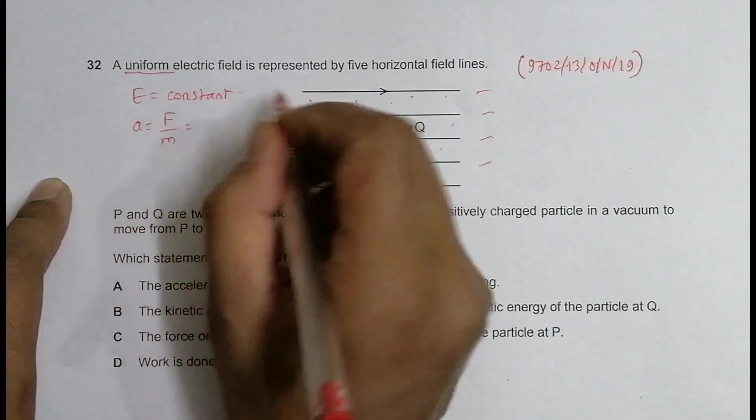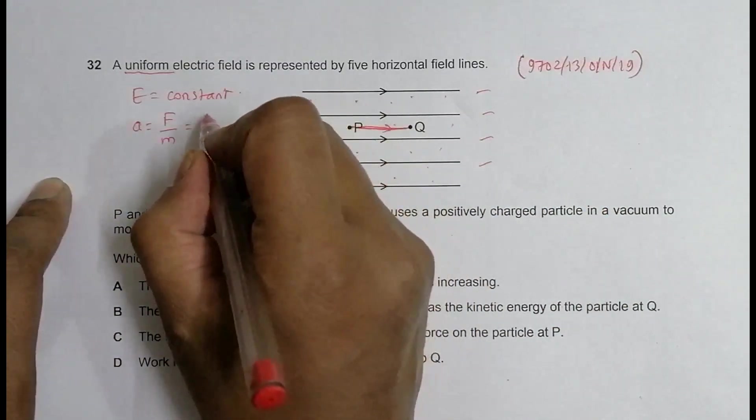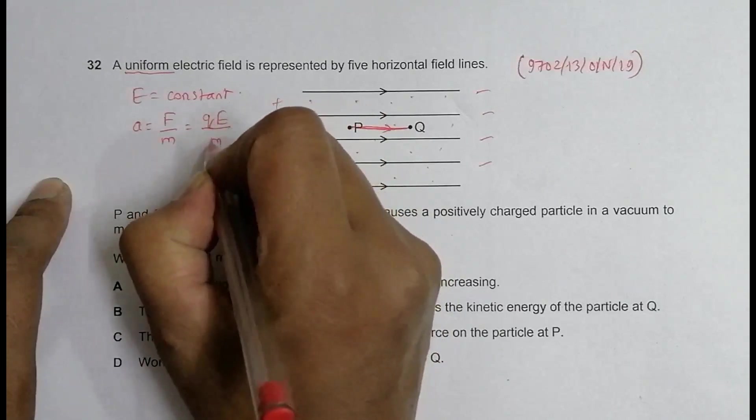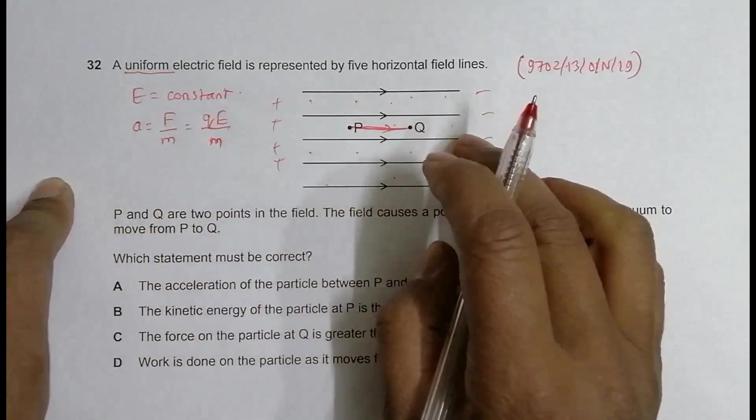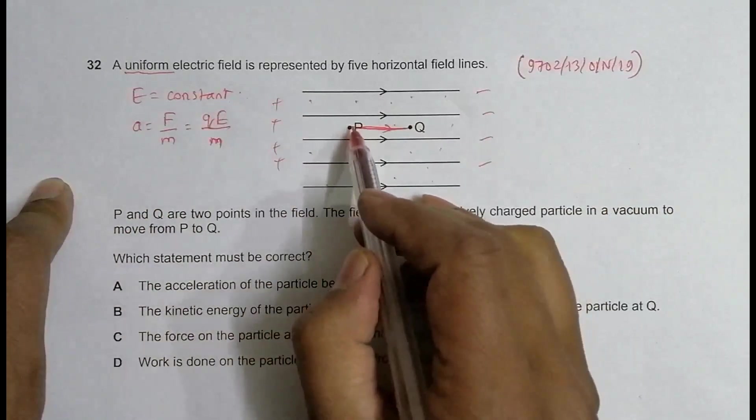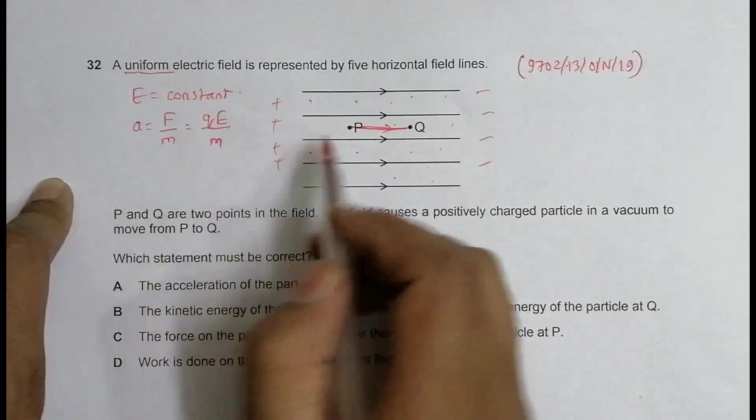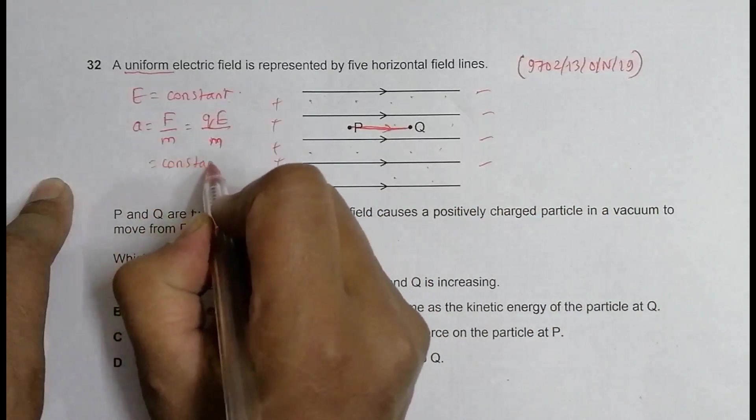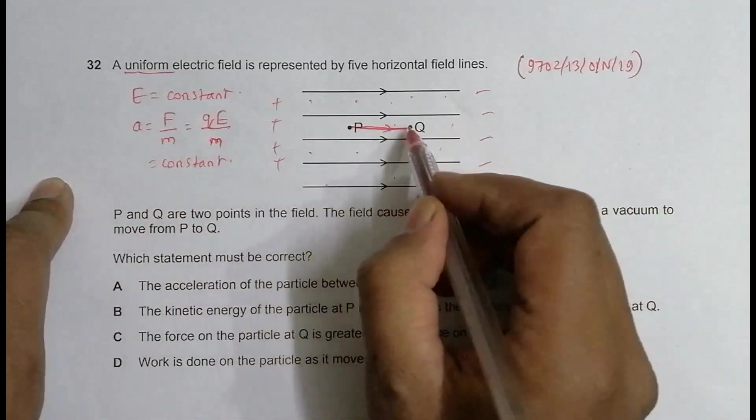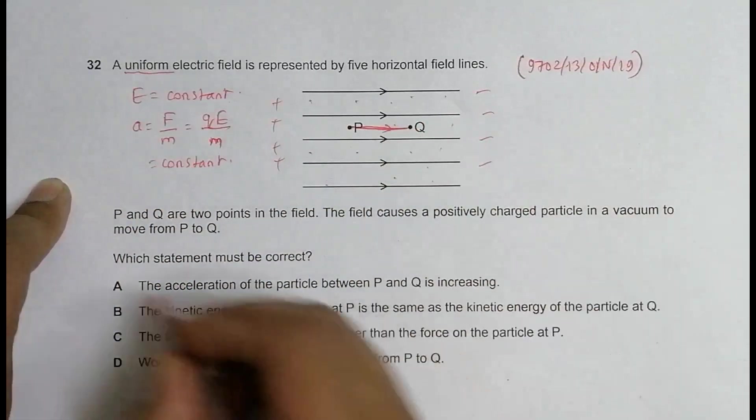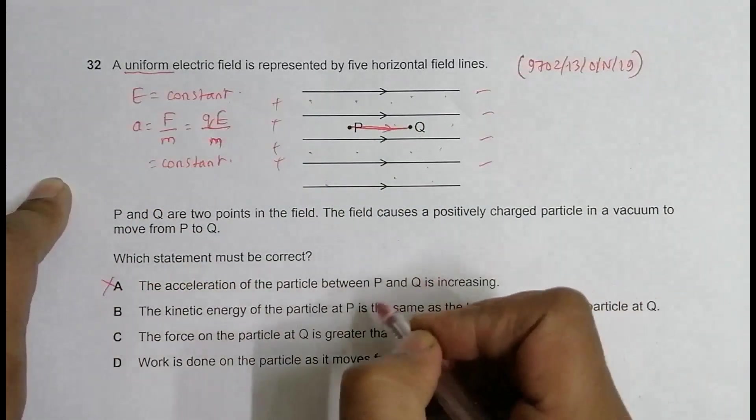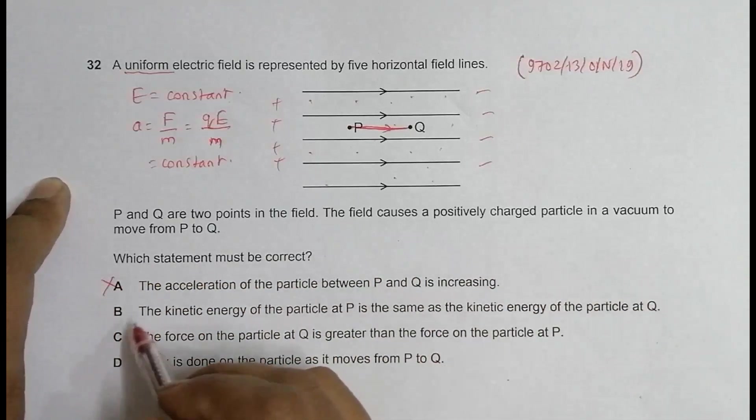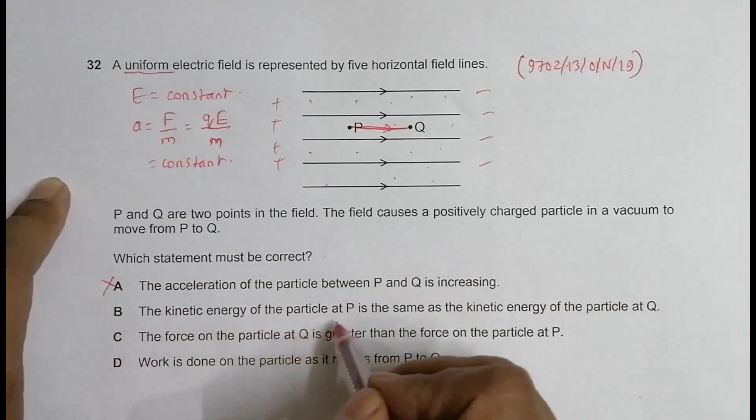So it is QE by M. That means mass is constant everywhere and Q also is constant, so that means a is equal to constant. The value of acceleration at P and Q should be same, so this statement is wrong because it says the acceleration increases.